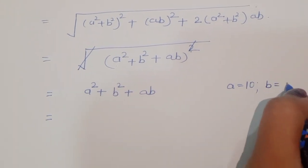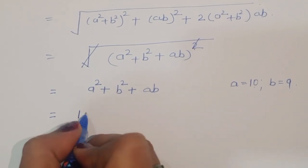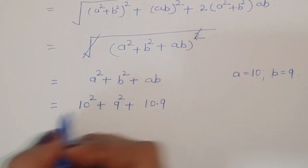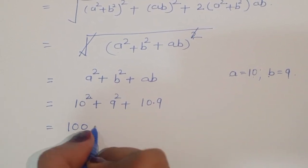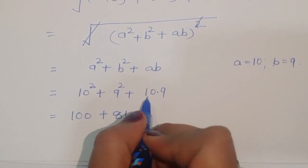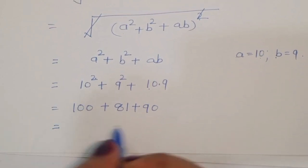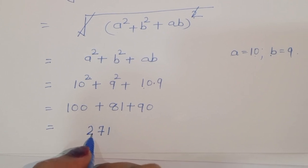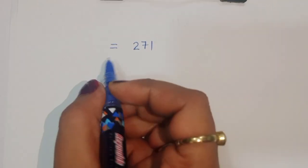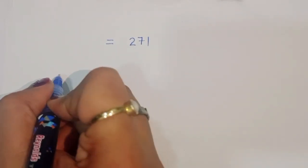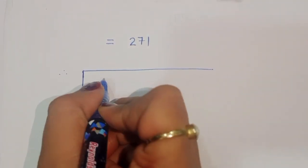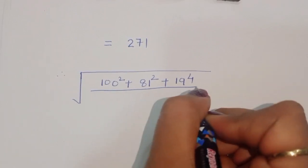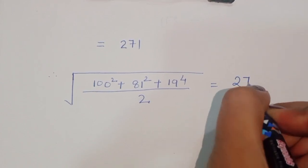Now substituting a equals 10 and b equals 9: 10 squared plus 9 squared plus 10 times 9, which gives 100 plus 81 plus 90 equals 271. Therefore, the value of square root of (100² plus 81² plus 19⁴ divided by 2) is equal to 271.